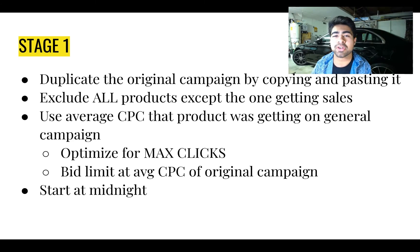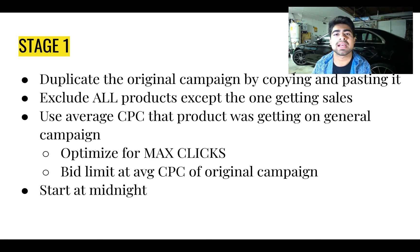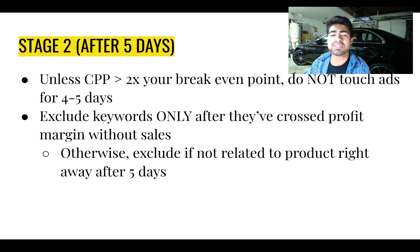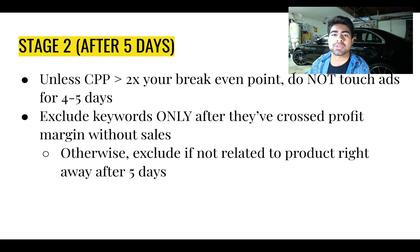Be sure to set the bid limit at the average cost per link click of your original campaign. You want to make sure to start this at midnight — the only reason I start these ads at midnight is because I want to give the Google campaign an entire day to fully optimize, very similar to Facebook Ads where you want to let a whole day go by while Google optimizes everything it possibly can. Once you have let this specific stage go and waited around an additional five days after completing Stage 1, it is time to move on to Stage 2.